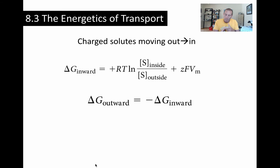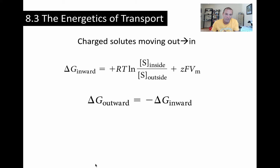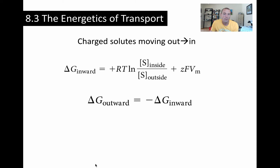Now for a charged solute, when we think about solute movement we've got to think about both the concentration gradient and the electrical gradient — there'll be two components to calculating delta G. The inward flux of a charged solute has the same concentration-gradient term as before, plus an additional term: z·F·Vm. Here z is the charge on the solute — for example, chloride is −1, a proton is +1. F is the Faraday constant, and Vm is the membrane potential expressed in volts.